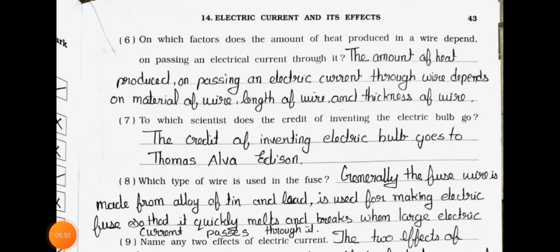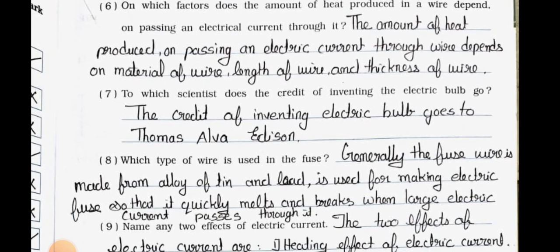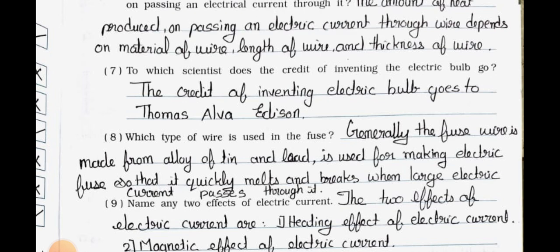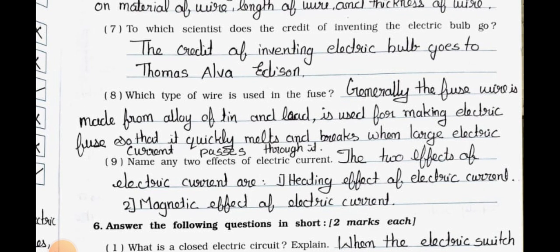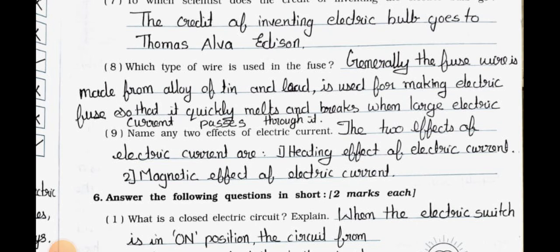Question 6: On which factors does the amount of heat produced in a wire depend on passing electric current through it? Answer: The amount of heat produced depends on the material of wire, length of wire, and thickness of wire. Question 7: To which scientist does the credit of inventing the electric bulb go? Answer: The credit of inventing the electric bulb goes to Thomas Alva Edison. Question 8: Which type of wire is used in the fuse? Answer: Generally the fuse wire is made from an alloy of tin and lead, used so that it quickly melts and breaks when a large electric current passes through it.